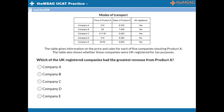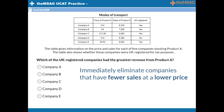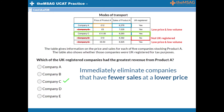Immediately eliminate companies that have fewer sales at a lower price. For example, compared to Company C, both Company B and Company E have fewer sales of Product A at a lower price, so they cannot possibly have more revenue than Company C. Don't forget that Company D is already eliminated because it is not UK registered. It's now down to Company A or Company C. The prices are very similar — £12 versus £11.50 — but Company C had much more sales, selling about 9,300 units against Company A's 6,400. This makes Company C the clear winner, without pressing a single button.